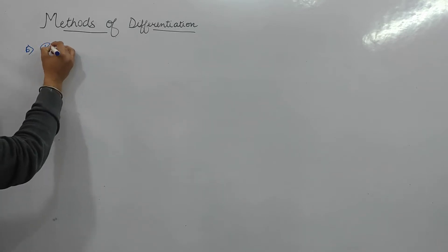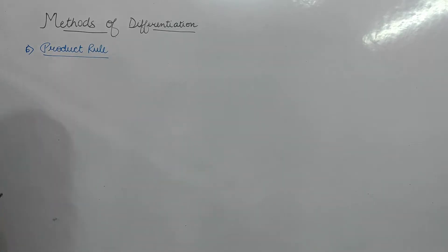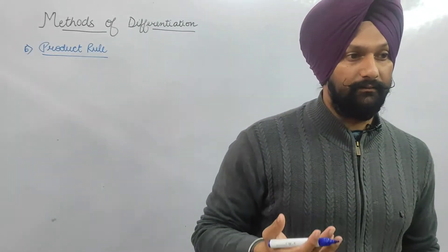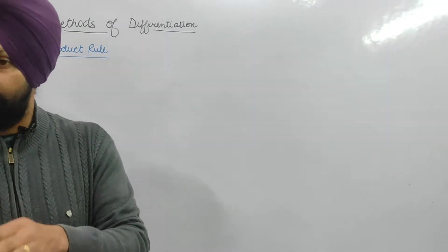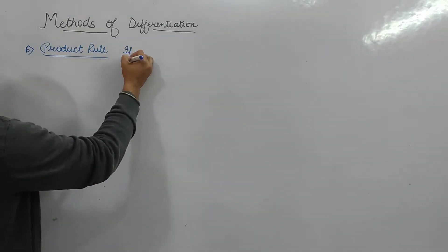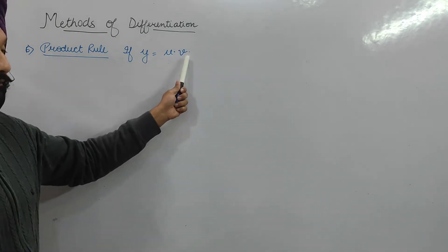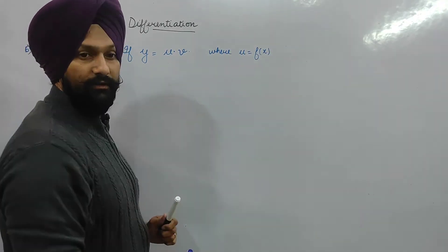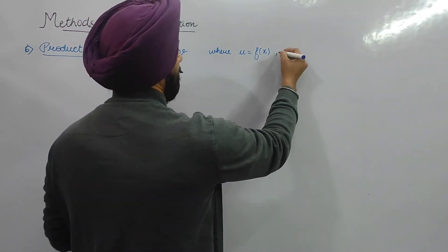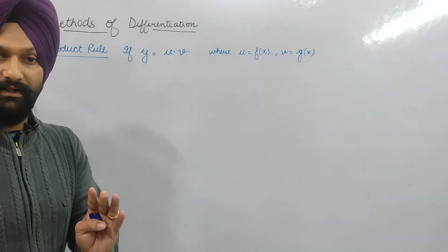The next rule is the product rule — rule number six — also called the multiplication rule. Unlike the sum or difference rule where addition or subtraction is given, here the main function y is a product of two functions u and v, where both u and v are functions in terms of x.